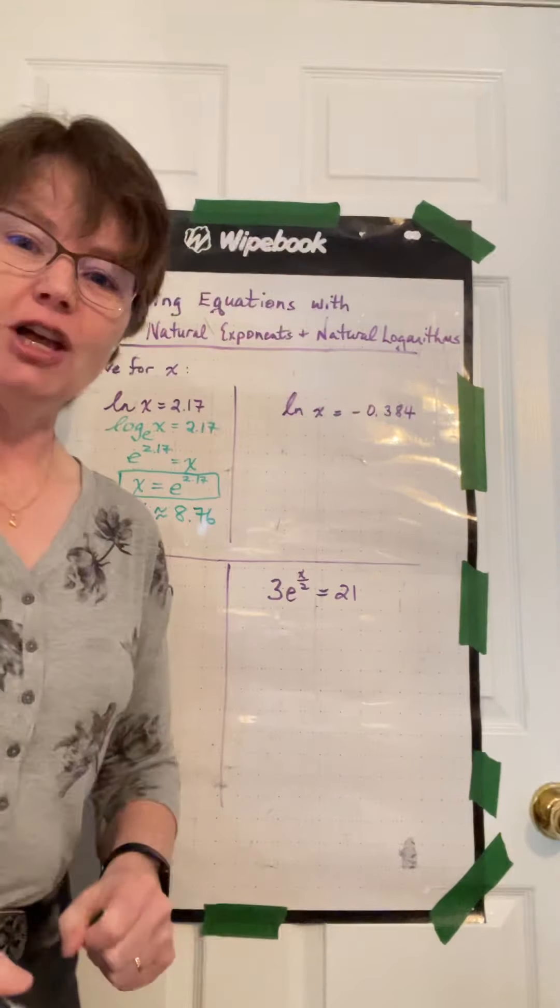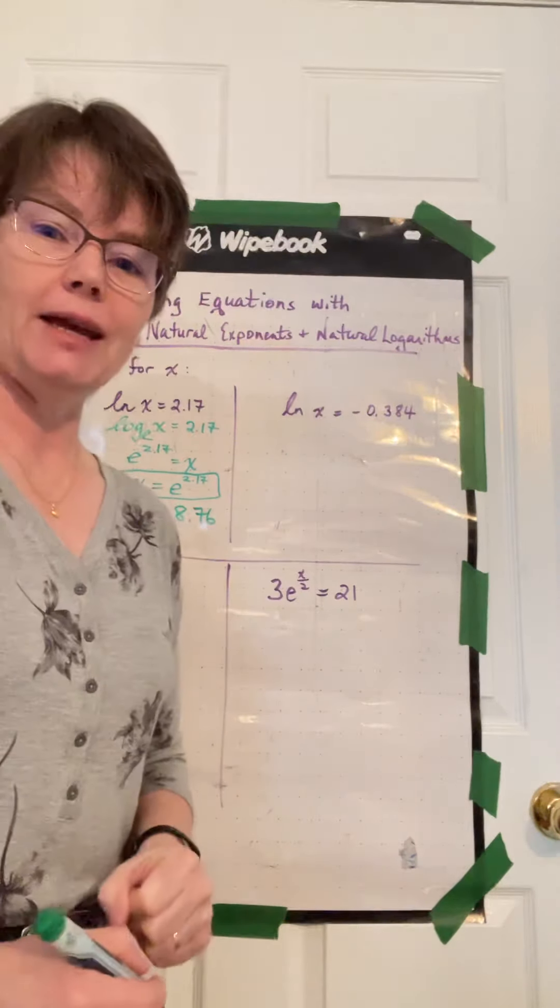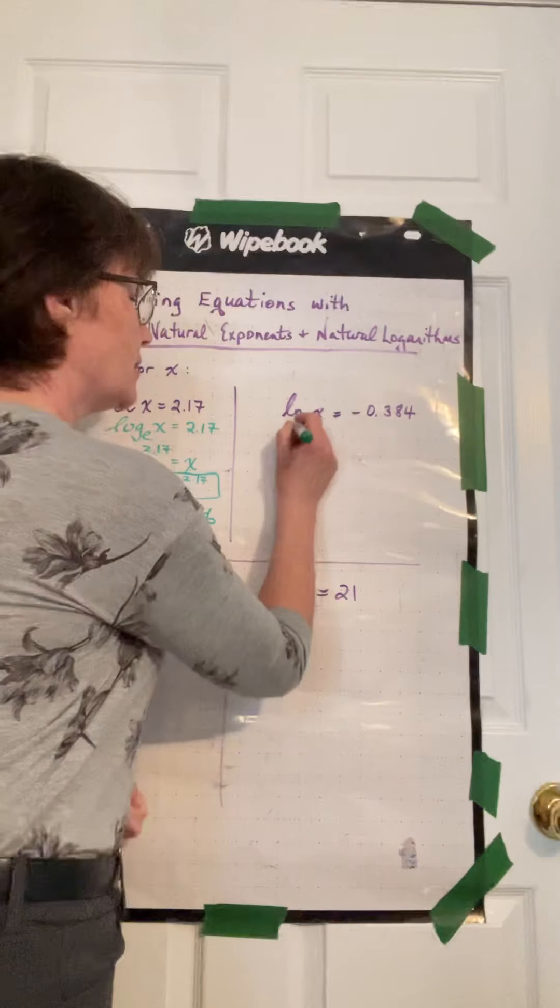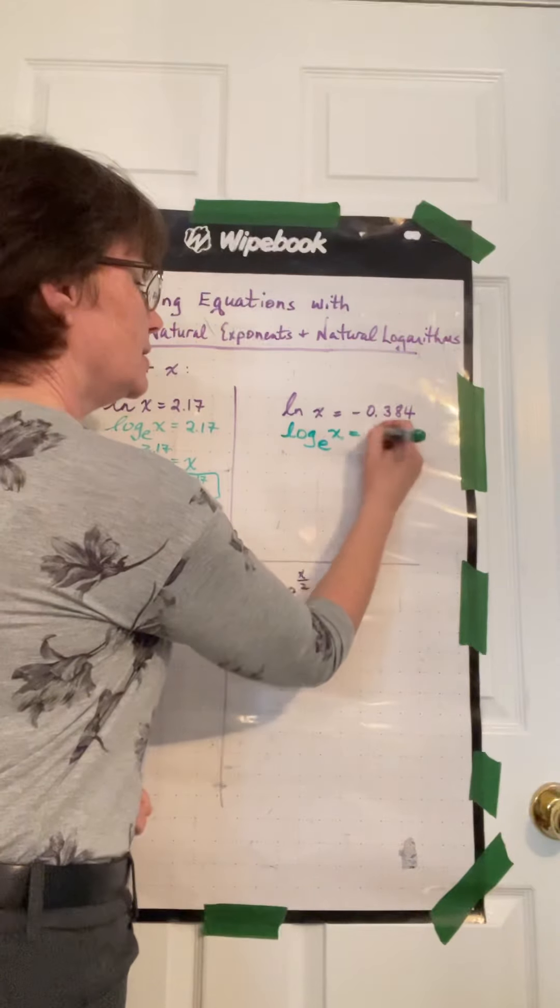Second example. ln x equals a negative decimal number, negative 0.384. Again, this actually means log base e of x is equal to this number.